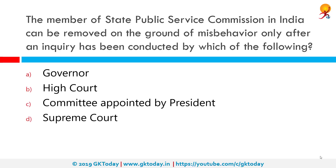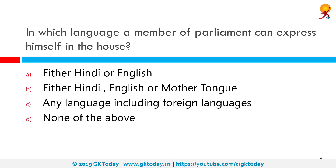The members of a State Public Service Commission in India can be removed on the ground of misbehavior only after an inquiry has been conducted by which of the following? The correct answer is the High Court. However, the chairman of the Union Public Service Commission can only be removed by the President on orders of the Supreme Court.